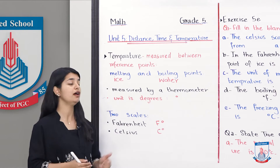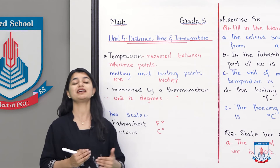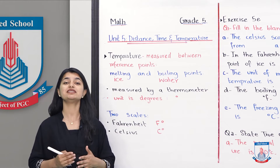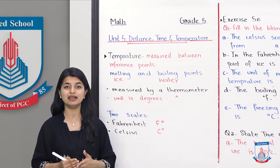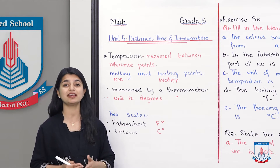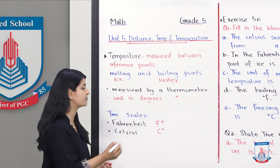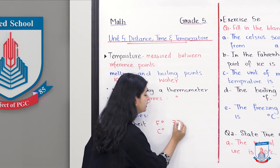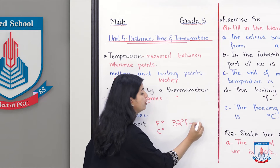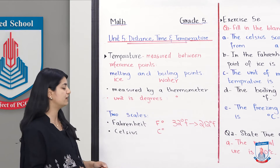On the other hand, the Fahrenheit scale was made by a German scientist. The melting point of ice starts from 32 degrees Fahrenheit, and its boiling point is 212 degrees Fahrenheit. In the middle there are all the divisions.